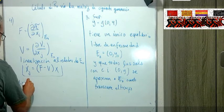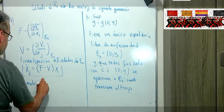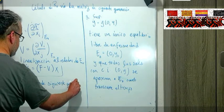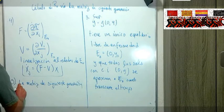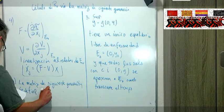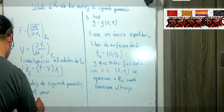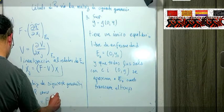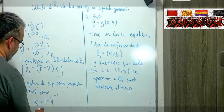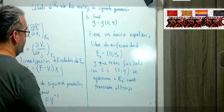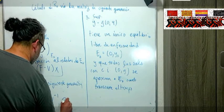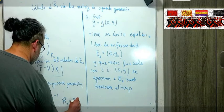Y fíjense que el sistema linealizado de las X pues tiene que cumplir que alrededor del equilibrio libre de enfermedad pues vamos a tener que esto se comporta como (F - V) por X. Pues esta es la linealización de la parte infecciosa de nuestro sistema alrededor del equilibrio libre de enfermedad. Y vamos a definir ahora sí ya con todos estos elementos la matriz de siguiente generación. La vamos a definir como el producto de F con V inversa y finalmente el radio espectral de esta K va a ser el parámetro R0. R0 se calcula como el radio espectral de K.